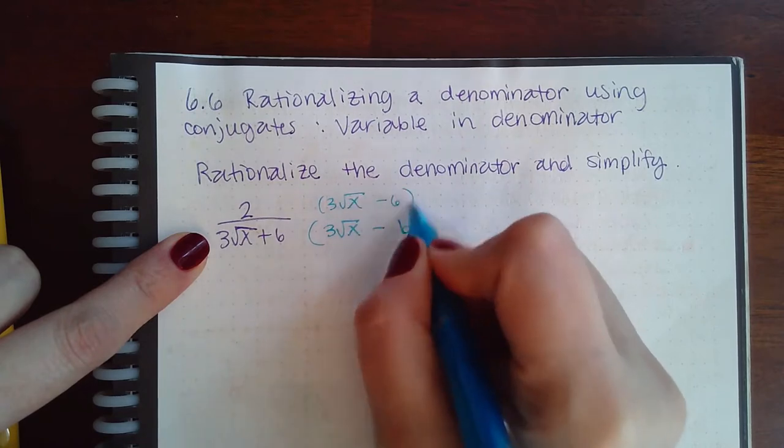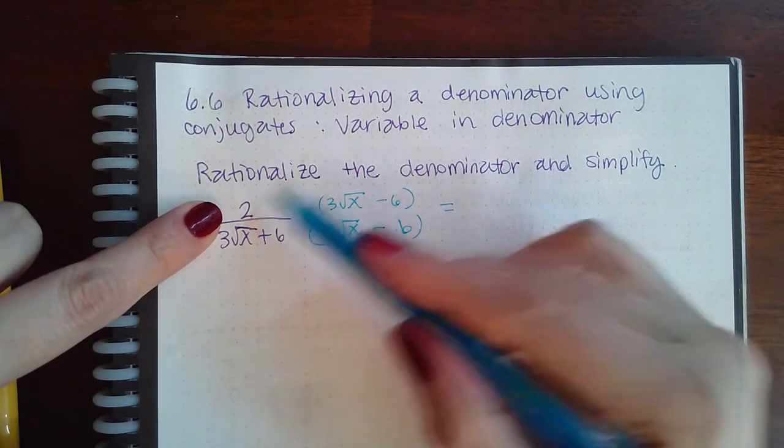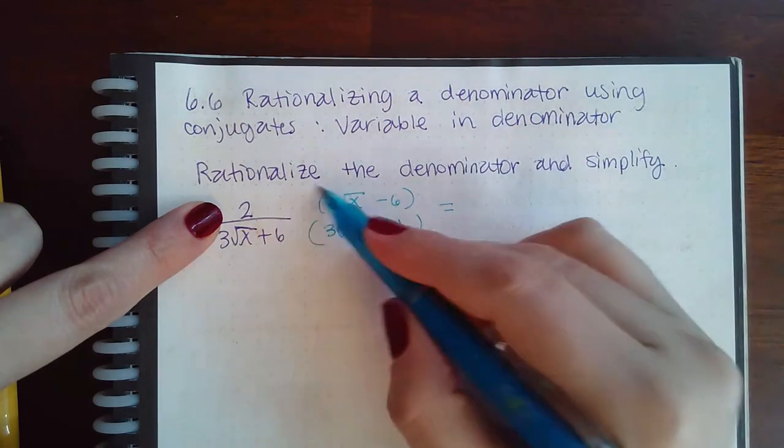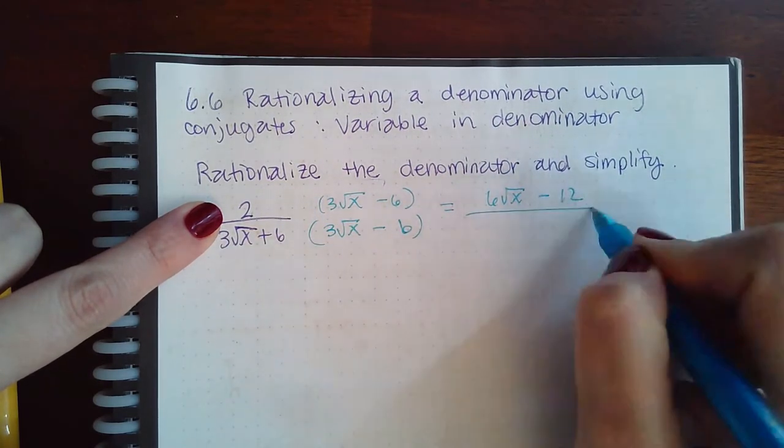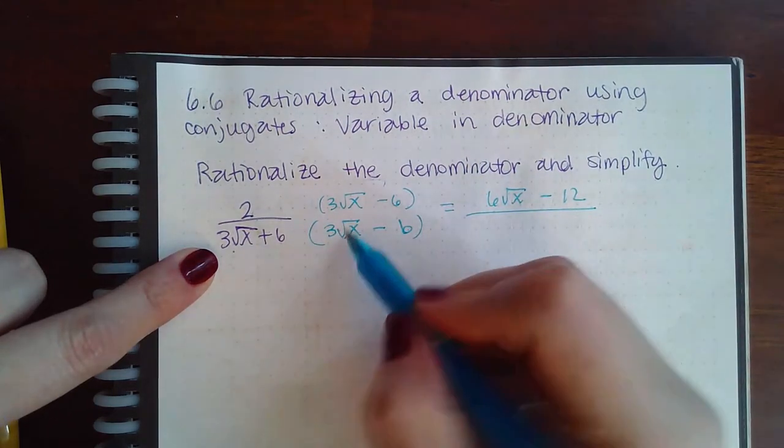I have a monomial times a binomial, which means I distribute. So 6√x minus 12. And at the bottom I have to FOIL it out. So 3√x times 3√x